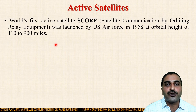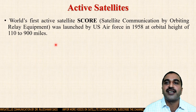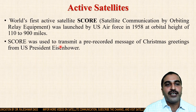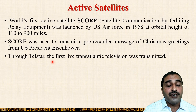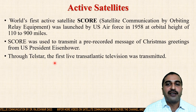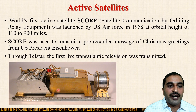The world's first active satellite, SCORE — Satellite Communication by Orbiting Relay Equipment — was launched by the US Air Force in 1958 at an orbital height of 110 miles. SCORE was basically used to transmit a pre-recorded message of Christmas greetings from the US President. After SCORE, Telstar came into the picture, also an active satellite, and for the first time a live television broadcast was done by Telstar.